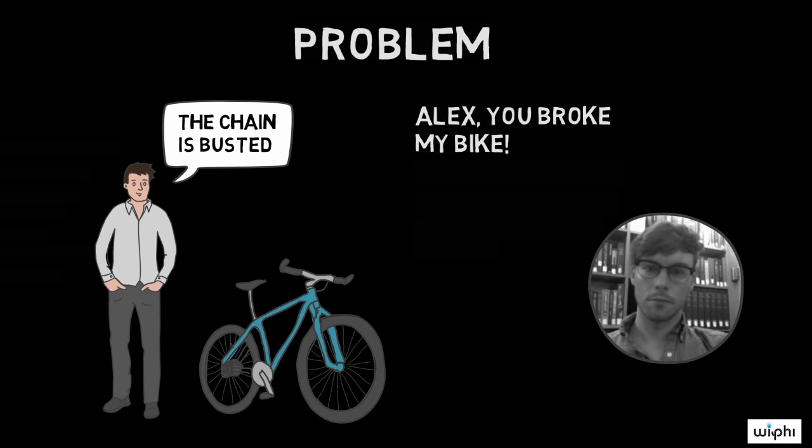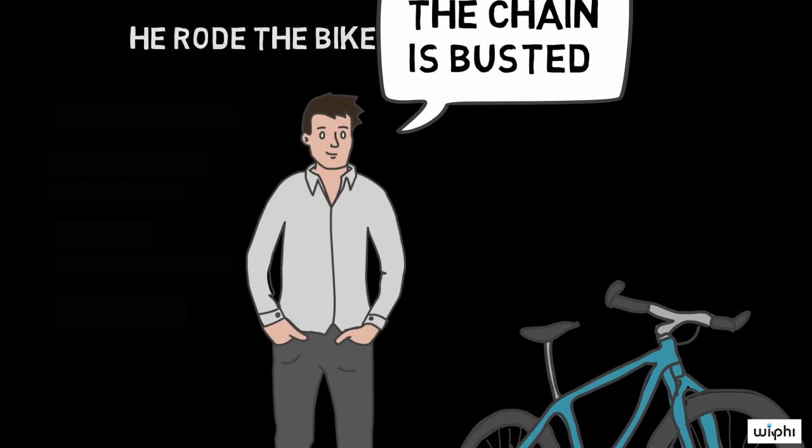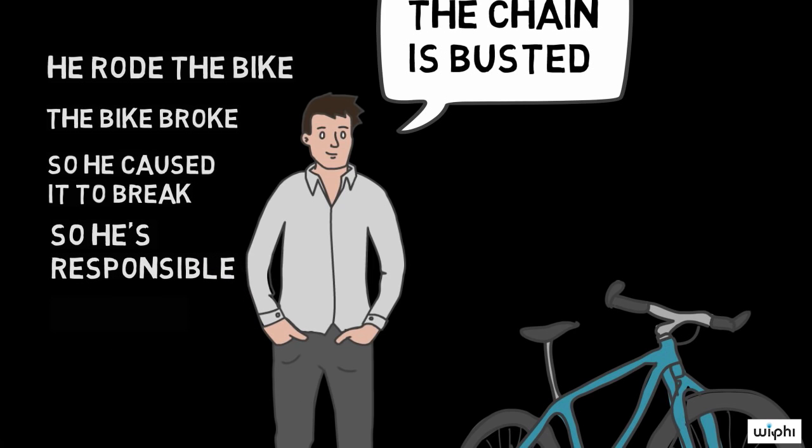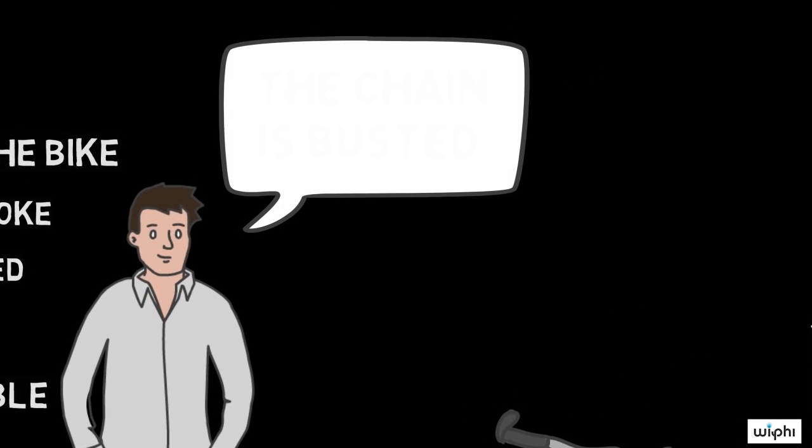I say, Alex, you broke my bike. You caused the chain to break. You're responsible for this. He rode my bike, and then it broke. It seems as though he caused it to break, so he should be responsible, right? But is this the correct conclusion for me to draw? Did Alex cause my bike to break? What do you think?